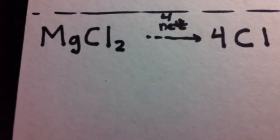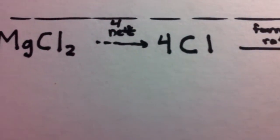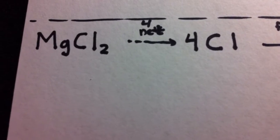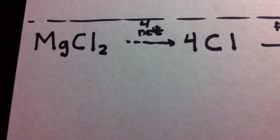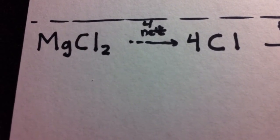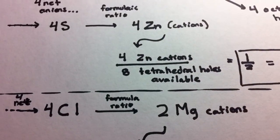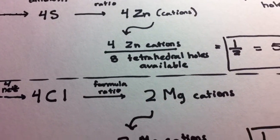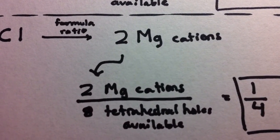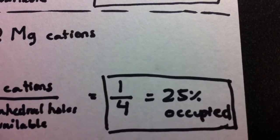If we go to magnesium chloride, we're going to do the same process. It's going to have four net anions — four chloride anions. We want to figure out the number of cations, so we do the formulaic ratio. We have two chloride atoms in this formula, so it's a one-to-two ratio. Doing the math, we get two cations for four chloride atoms. So it's two cations over eight tetrahedral holes, which comes out to one-fourth, or 25% occupied.